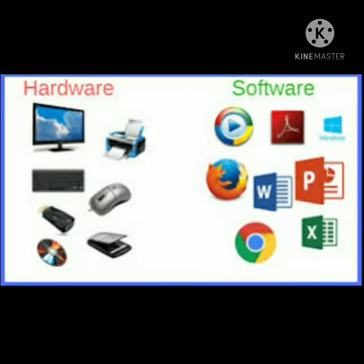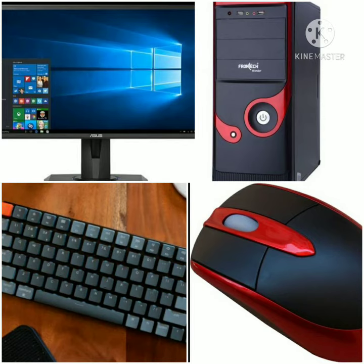Good morning students. Today you will learn about the types of software. A computer system can be considered to be made up of two main components: first is hardware, second is software. Hardware refers to the physical and visible components of the system, such as a monitor, CPU, and keyboard — things we can touch and feel.